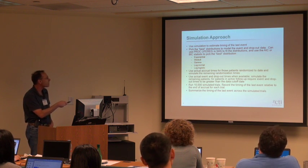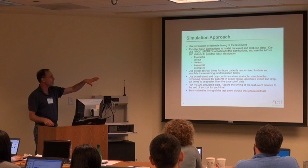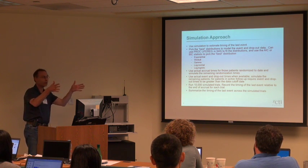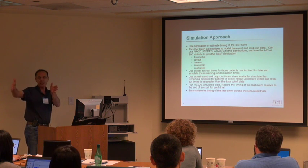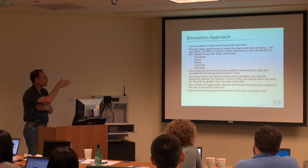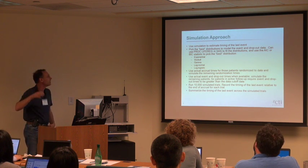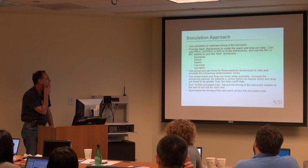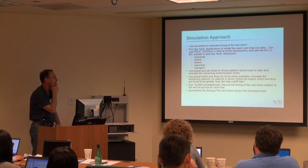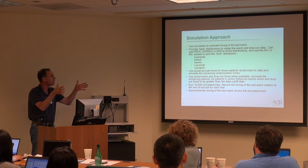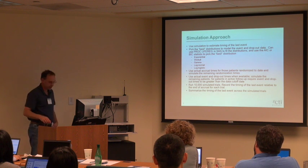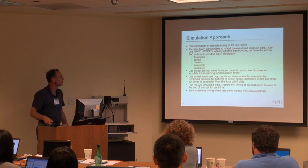I'm going to use the actual accrual time for patients already randomized to date. If I'm in the middle of accrual, I'll pick an end time and simulate new patients from the data cutoff until that end time. I'll use the actual event and dropout time data when it's available, and for remaining patients I'll simulate from the best-fitting distributions.